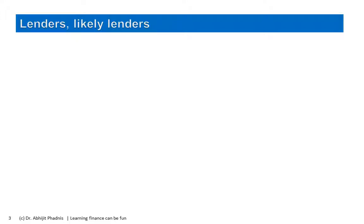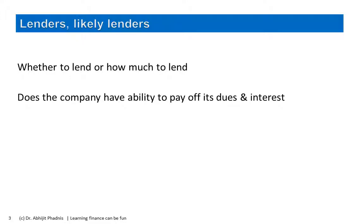Then there are lenders who want to lend money — there could be banks, financial institutions, and other institutional lenders, domestic or foreign — who have certain expectations and always look at financial statements to check whether those expectations are likely to be fulfilled. One of the important decisions they must take is whether to lend at all, and if so, how much. A very important aspect lenders look at is whether the company has the ability to pay off its dues and interest, because recovering money later can become very difficult.